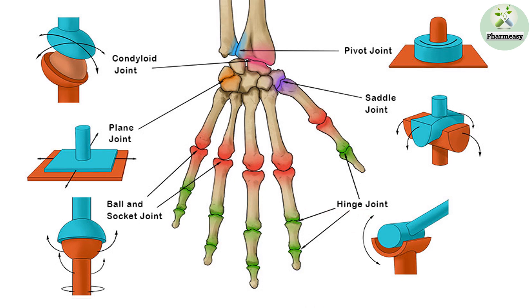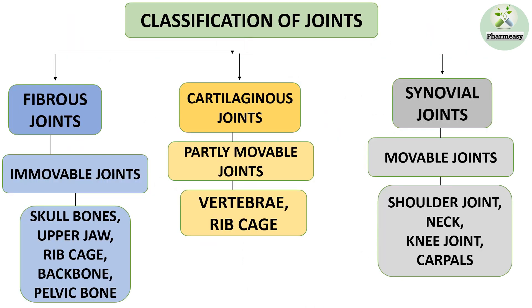Our next topic is the classification of joints. Joints are classified into three categories: fibrous joints, cartilaginous joints, and synovial joints. Fibrous joints are immovable joints, and these joints are present in skull bones, upper jaw, rib cage, backbone, and the pelvic bone.